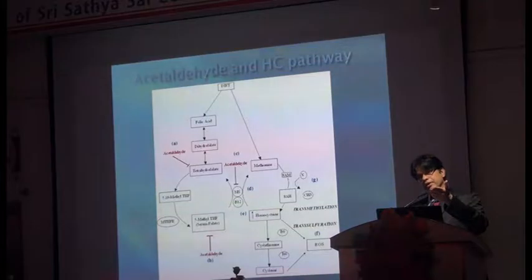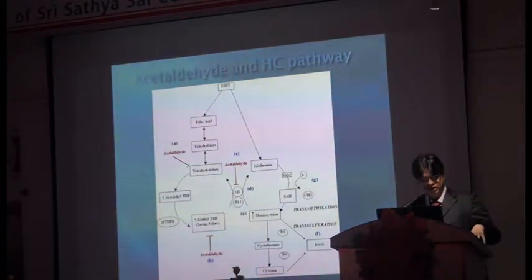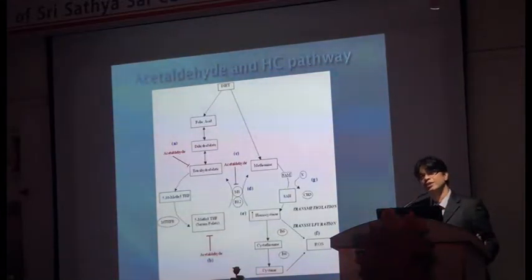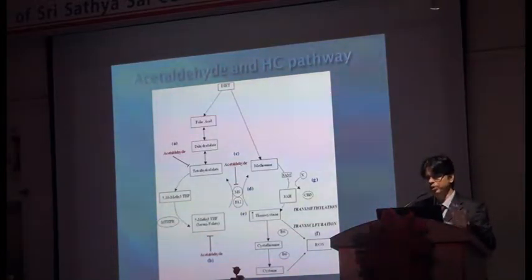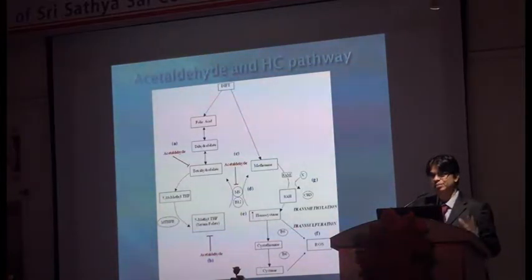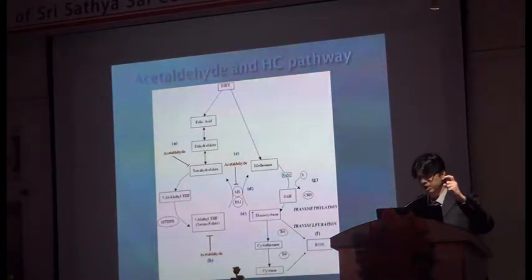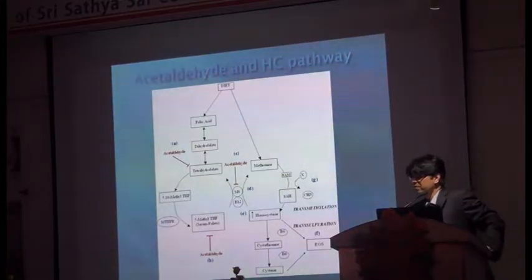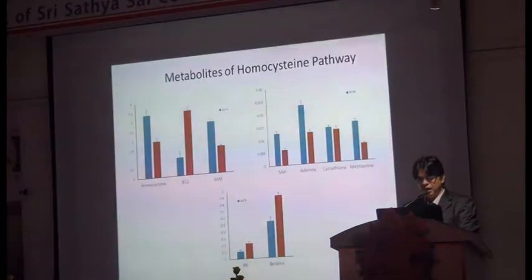Looking at different types of AVN — steroid-induced, post-traumatic, idiopathic — in our setup most were idiopathic. We had about 25% alcohol-induced, 20% steroid-induced, and about 20% post-traumatic. But close to 40% were idiopathic AVN cases, and I really cannot answer that question. Some of those cases were fulminant, progressing very rapidly within three years and leading to big collapse.